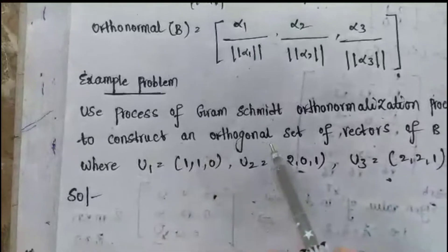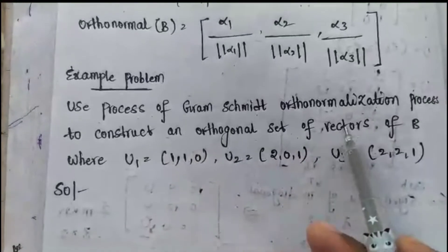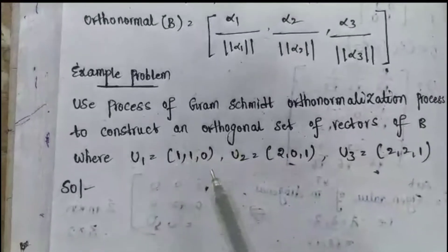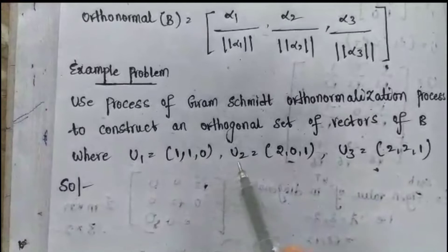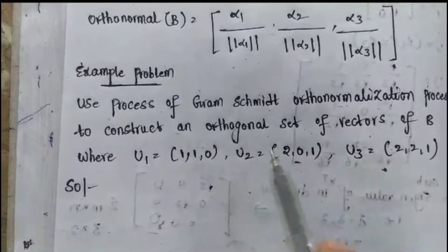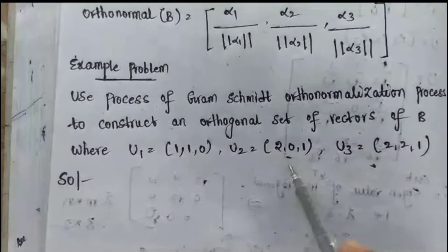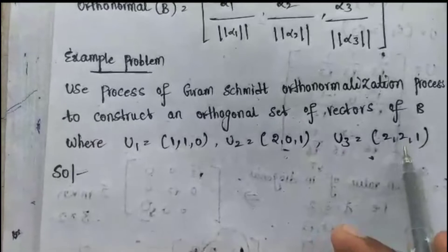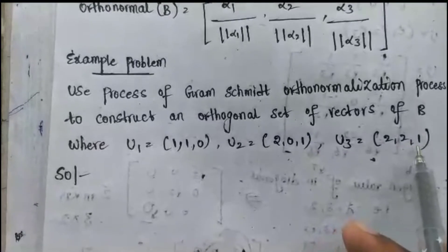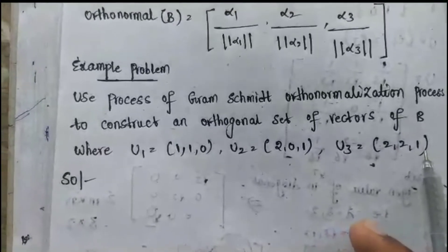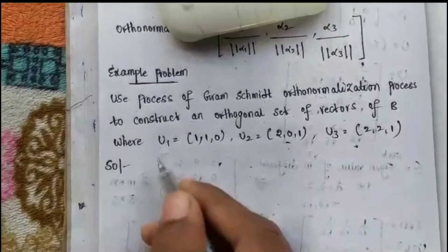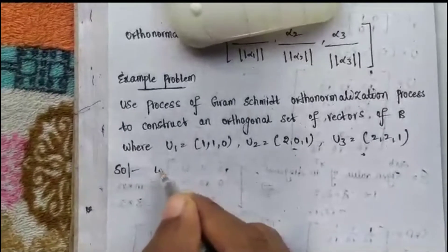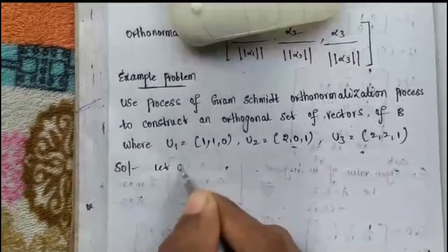Construct an orthonormal set of vectors where u1 = (1, 1, 0), u2 = (2, 0, 1), u3 = (2, 2, 1). Let us solve the given problem.